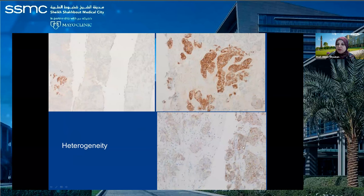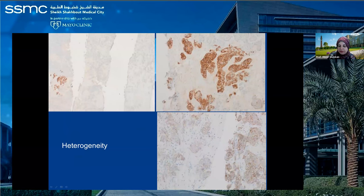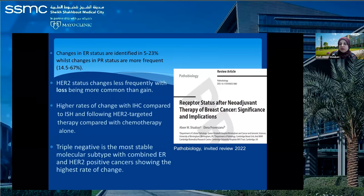Heterogeneity can be intermingled, with two patterns either in contact with each other or completely different clones. You can also see heterogeneity in FISH testing — in the same case, an area that was 3+ by IHC was FISH amplified while the rest was not. HER2 is less frequently changed compared with PR after neoadjuvant chemotherapy, and FISH is generally more stable than IHC. The triple negative breast cancer molecular profile is the most stable and is unlikely to change after treatment.